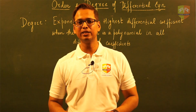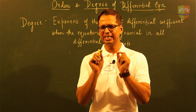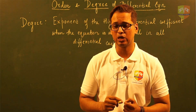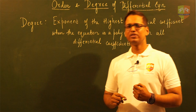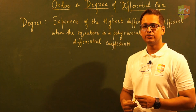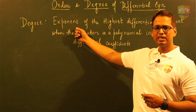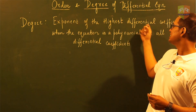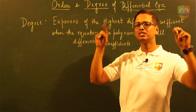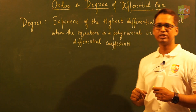Now let us understand the degree of a differential equation. This aspect of degree is slightly critical, so you have to be very attentive. The degree of a differential equation is the exponent of the highest differential coefficient. Exponent means the power — it's the power of the highest differential coefficient. In the previous video, we talked about the order of the differential equation, where I taught you how to identify the highest differential coefficient, that is, the maximum number of times the derivative of y has occurred with respect to x.